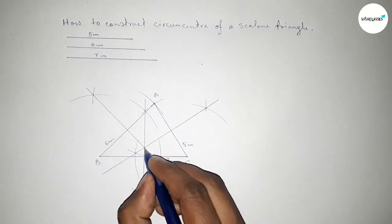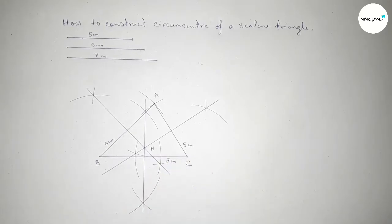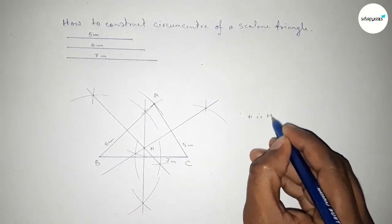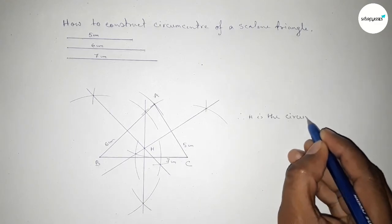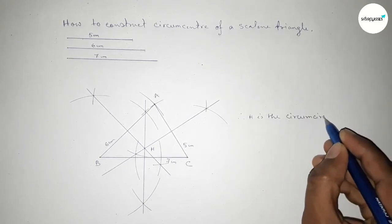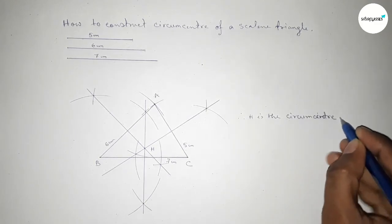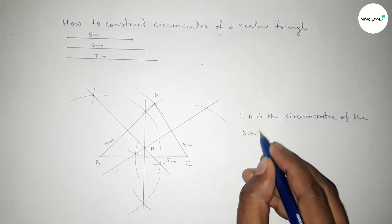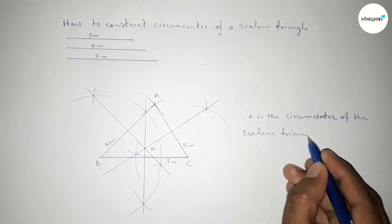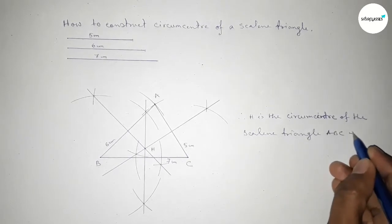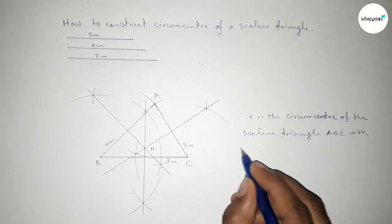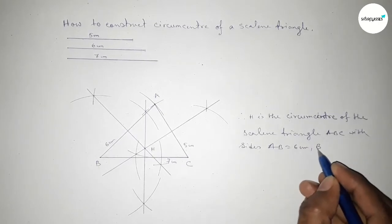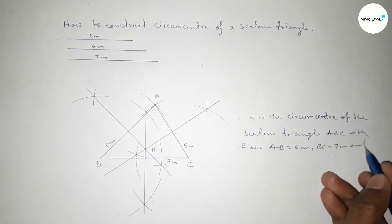All three bisectors meet at a point H. So H is the circumcenter of this scalene triangle ABC, where AB equals six centimeters, BC equals seven centimeters, and AC equals five centimeters. This is the process to construct the circumcenter of a scalene triangle using a compass in an easy way.